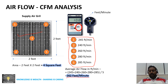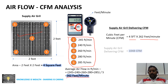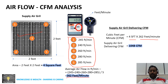Since we have both the area in square feet and the average airflow of 262 feet per minute for the supply grill tile, we simply multiply to calculate CFM. The supply air tile is delivering approximately 1,048 CFM.